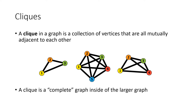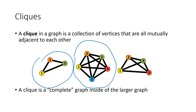Something else we can think about to try to get a handle on how many colors we need is to think about cliques. A clique in a graph is a collection of vertices that are all mutually adjacent to each other. So here in this first picture we have three vertices that are all directly connected by edges. In the second picture we've got five vertices that are all mutually connected by edges, so every possible pair of these vertices are connected by an edge. And in this last picture we've got a clique of four vertices. So a clique is a complete graph inside of our larger graph.